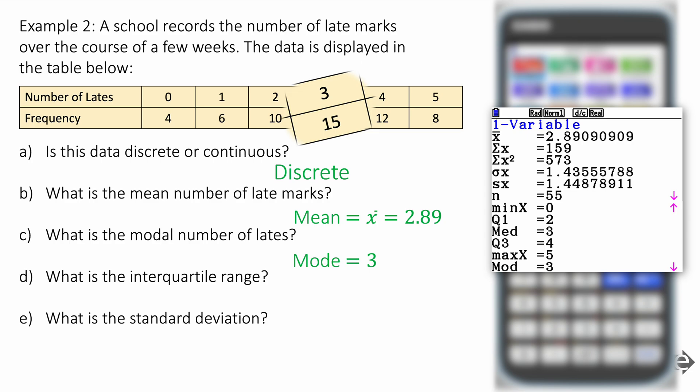What is the interquartile range? Well, that's Q3 minus Q1, the upper quartile minus the lower quartile. And that's 4 minus 2, which is 2. And the standard deviation is given by the sigma symbol, which is on the list as sigma X, which rounds to 1.44. And we're done. Excellent.